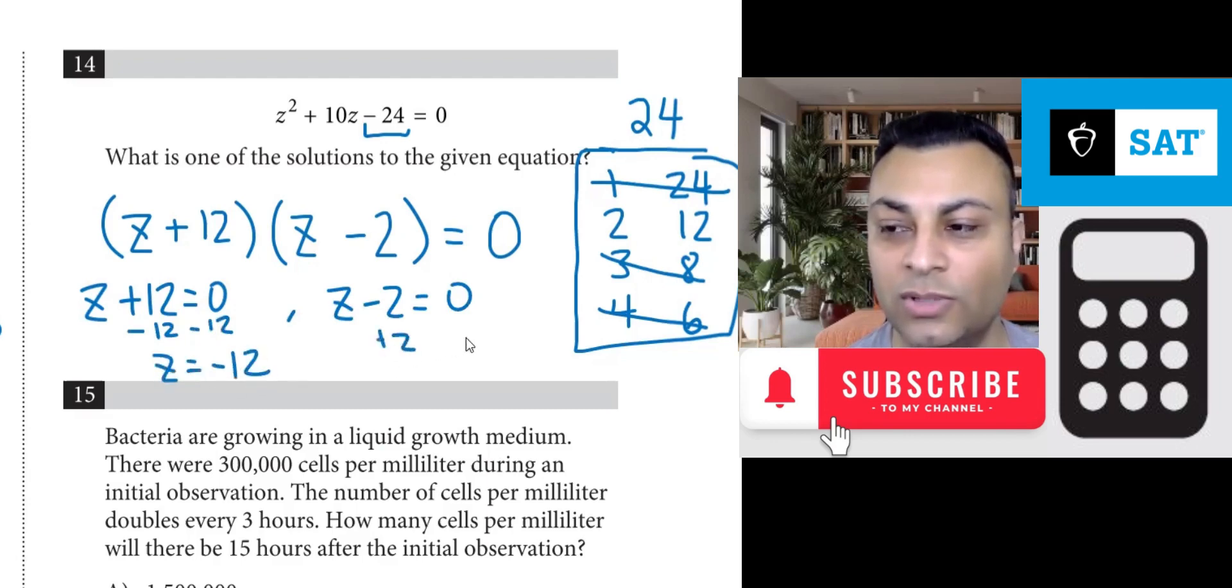Here you add 2 and you get z equals 2. So our answers are 2 or negative 12.